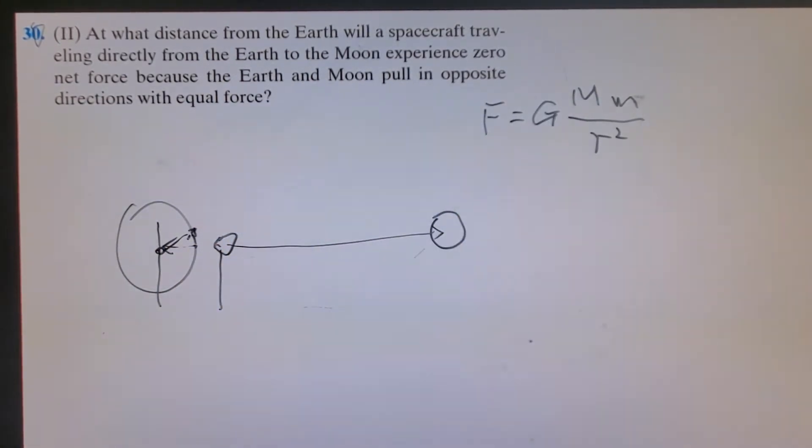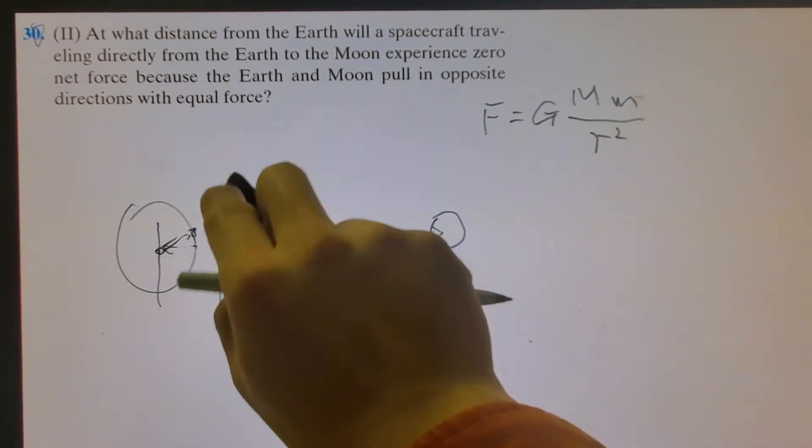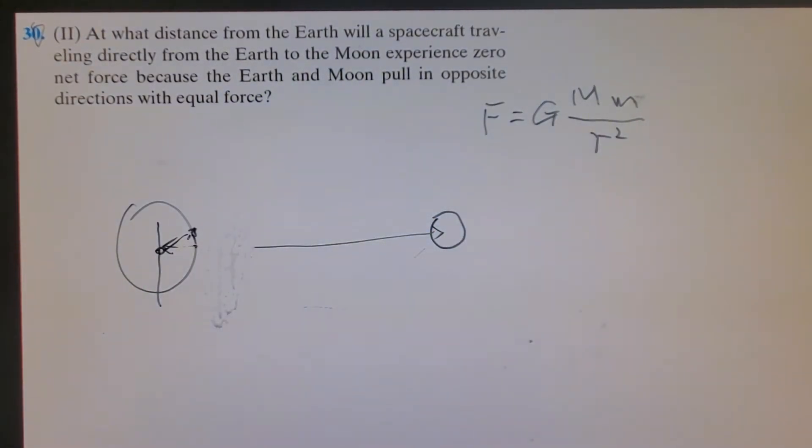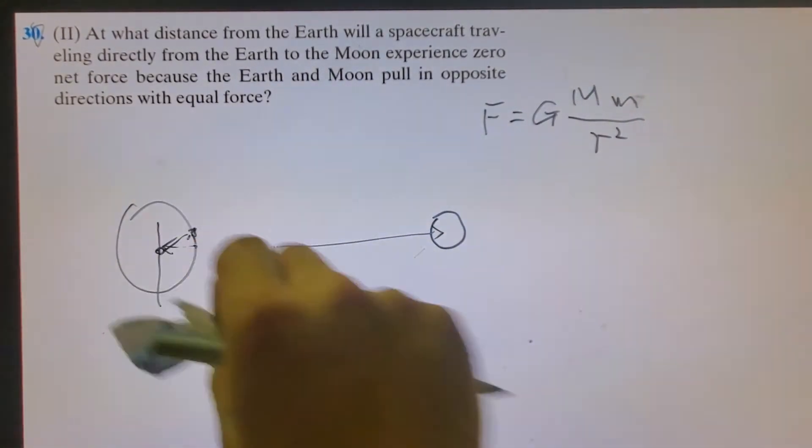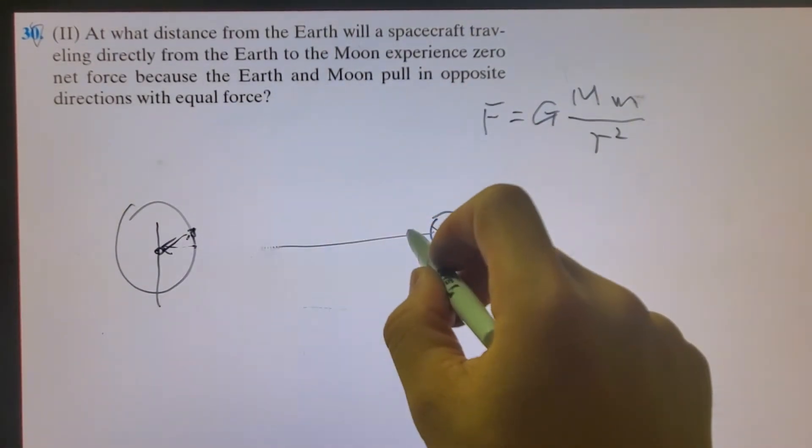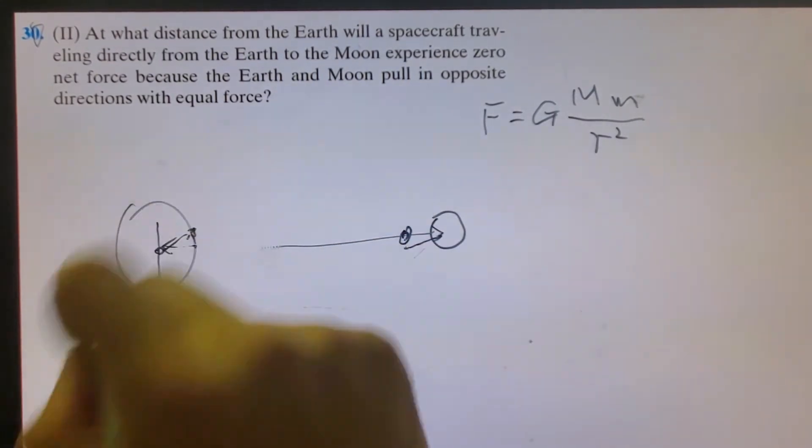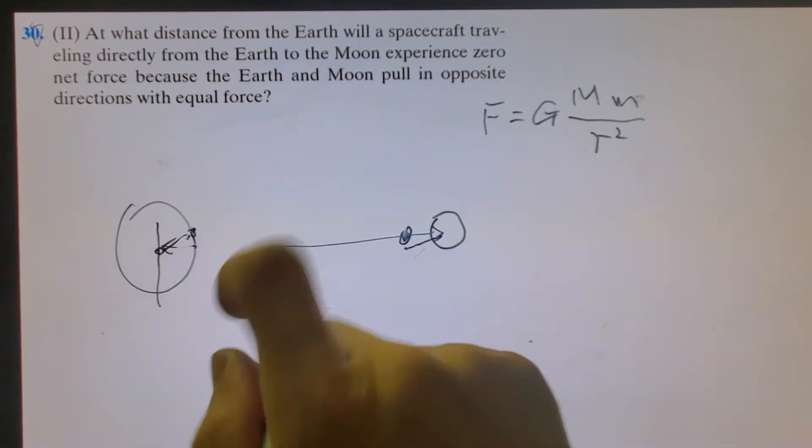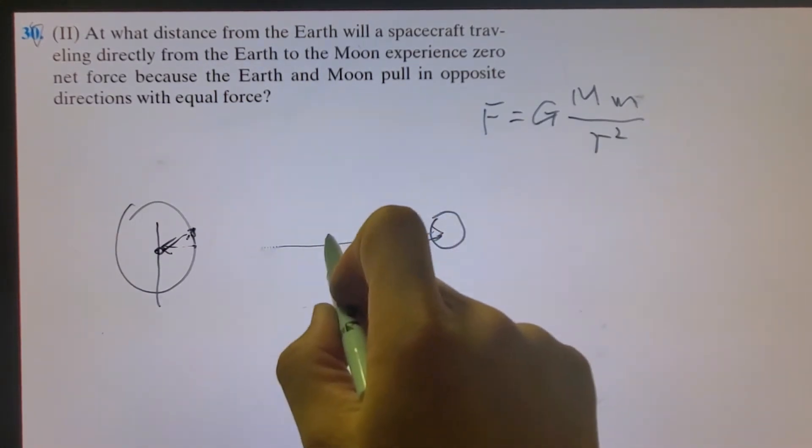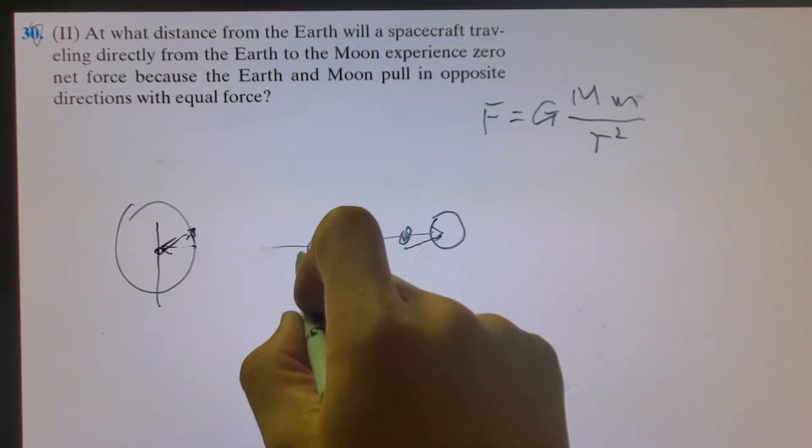So if this spacecraft keeps moving, when it goes to a certain point, let's say if it's over here, after you go over here, then it will feel more attraction force from the moon than from the Earth. That means there must be somewhere along the line over here where it will be balanced.